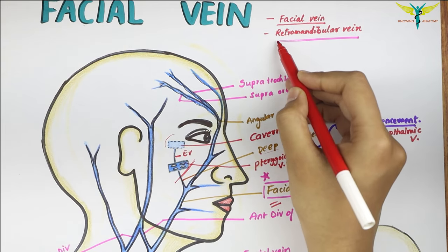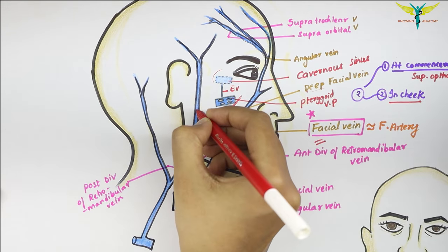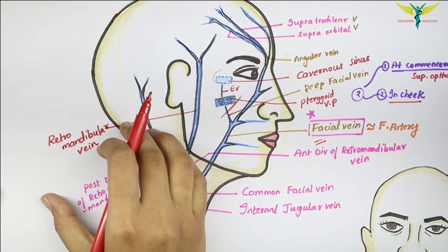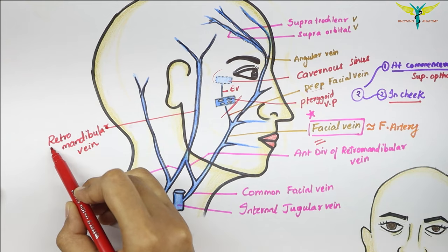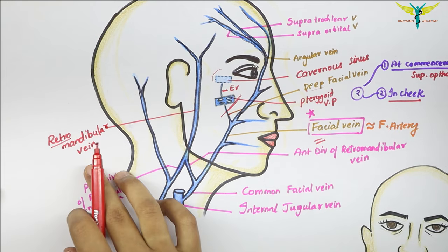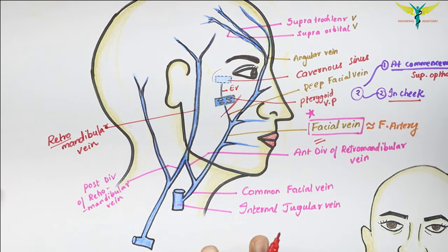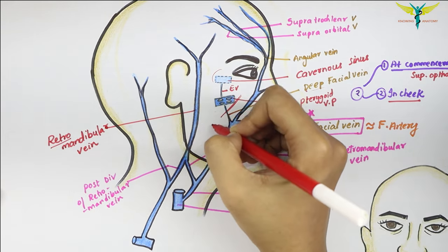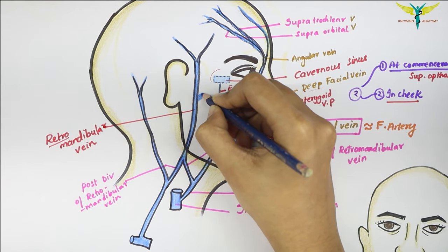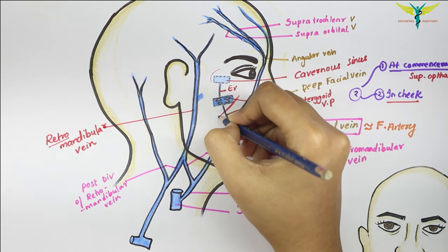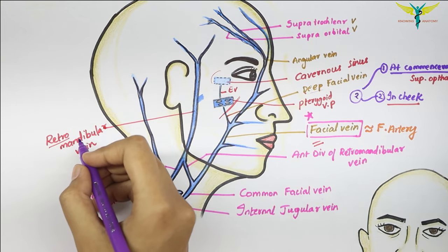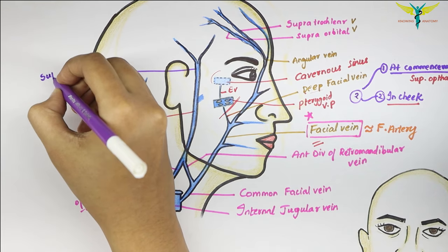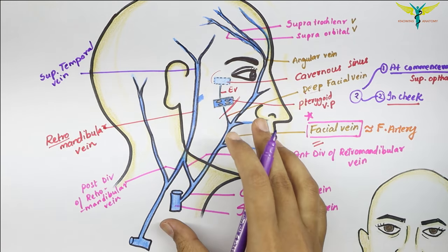Now coming to the retromandibular vein. As the name suggests, retromandibular means behind or posterior to the mandible. It is formed within the parotid gland by the union of two veins: the superficial temporal vein and the maxillary vein.